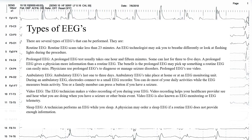There are several types of EEGs that can be performed. A routine EEG scan takes less than 23 minutes. An EEG technologist may ask you to breathe differently or look at flashing lights during the procedure. A prolonged EEG test usually takes 1 hour and 15 minutes, and some can last for 3 to 5 days. A prolonged EEG gives a physician more information than a routine EEG, and may pick up something a routine EEG can easily miss.